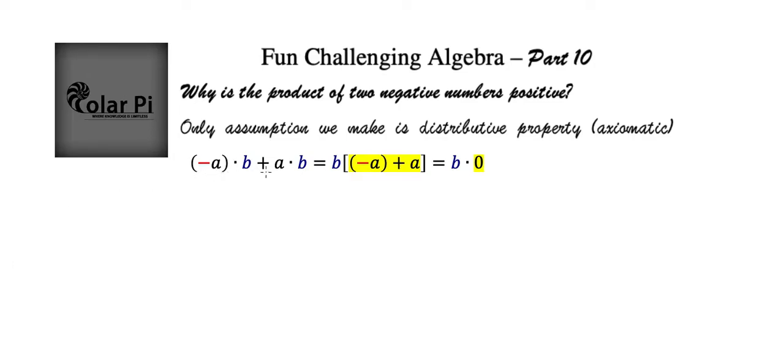Notice that (-a)·b + a·b is equal to this here. This is where I use the distributive property backwards. I factored out a b, but that's using the distributive property in reverse—that's what factoring is. Now, (-a) + a is zero, so we have b times zero, and we see that this equals zero.